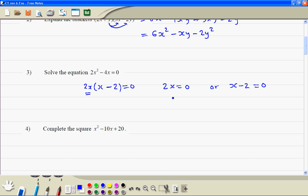From here, we divide both sides by 2, we get x equal to 0. Here we add 2 to both sides, so we get x equal to 2.